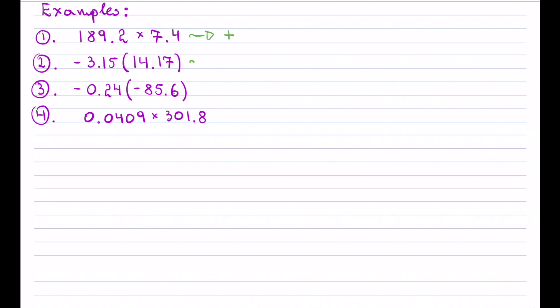In the second example I have a negative times a positive, so the answer is negative. In the third example I have a negative times a negative, so the answer is positive. Finally, the last example the answer will also be positive because I have two positive numbers.